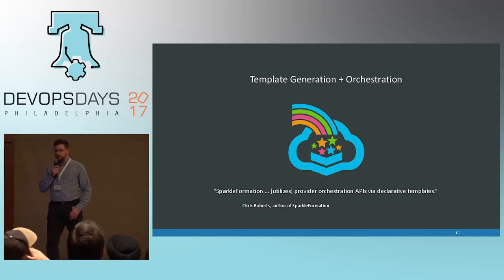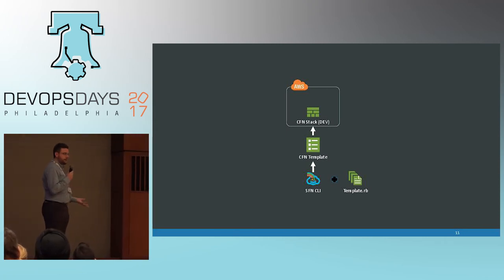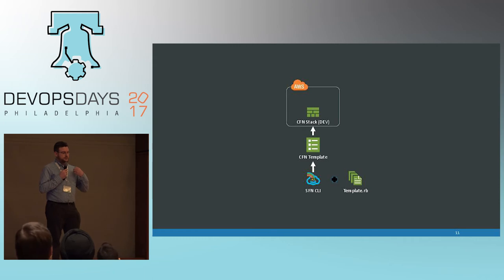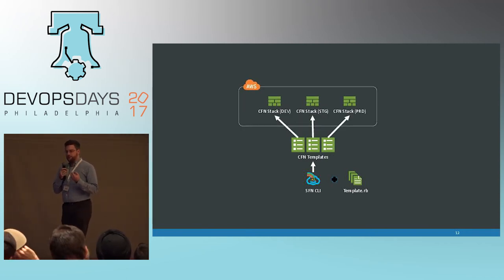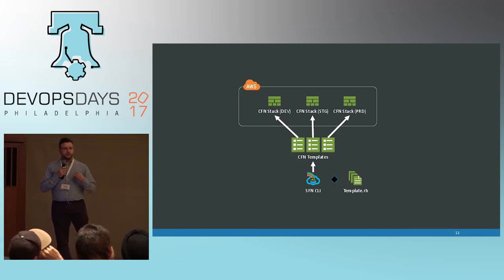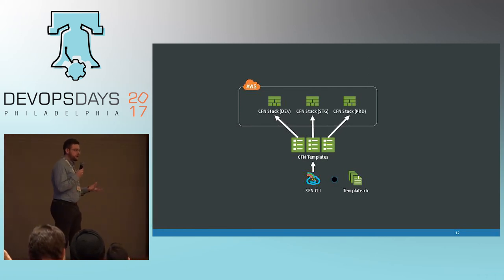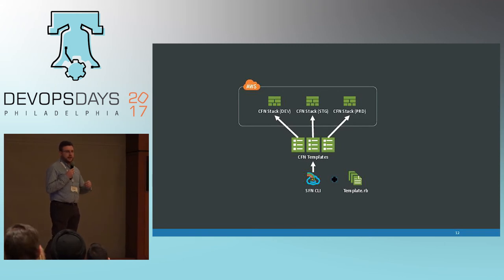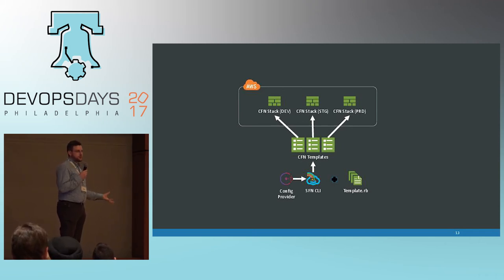SparkleFormation is a tool written in Ruby by Chris Roberts of HashiCorp. It consists of a Ruby library to assist in writing template generation code, and a command line tool that calls all those orchestration APIs. In this diagram, we can see a Ruby template running through the CLI tool, generating CloudFormation templates. We can generate multiple templates from a single Ruby definition by injecting configuration, each provisioning a different VPC with subnets, security groups, etc., so all environments come from the same definition.